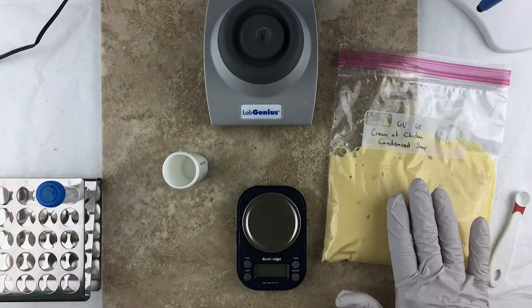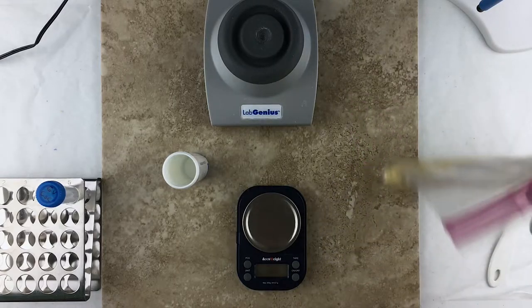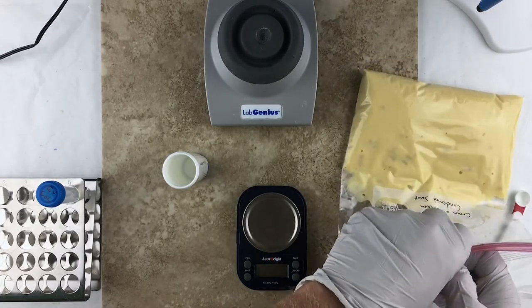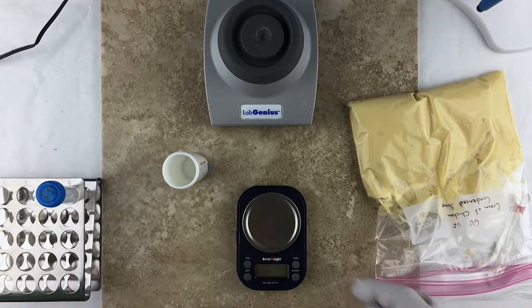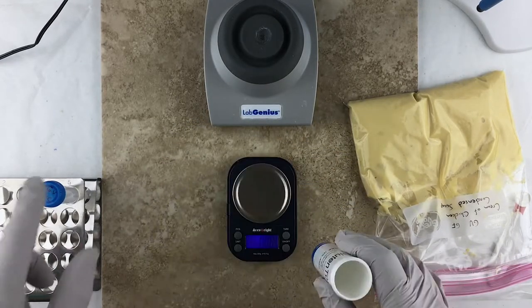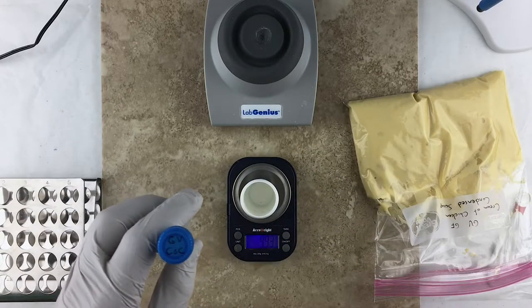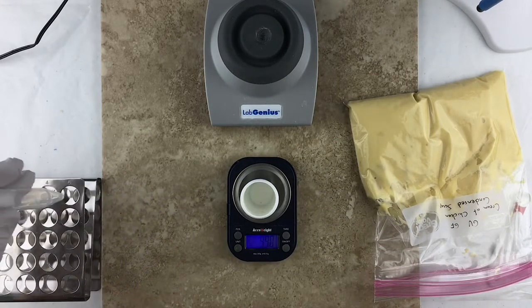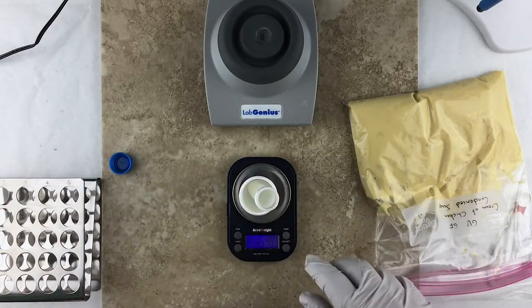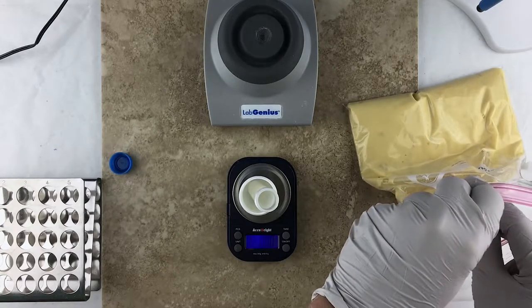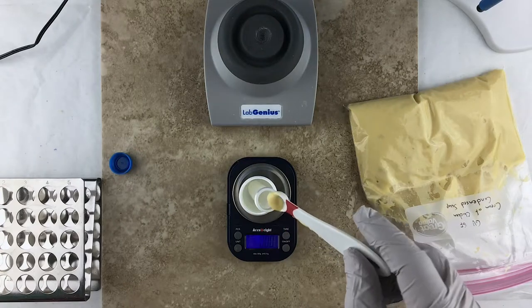So I've got the Great Value Gluten-Free Cream of Chicken Condensed Soup ready to begin the process of testing. The first step is we need to measure out one gram of the soup into this test tube right here. So I've got this test tube labeled GVCOC, Great Value Cream of Chicken. I'm going to put this empty tube on the scale here.